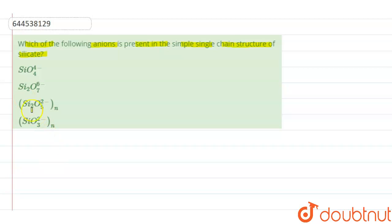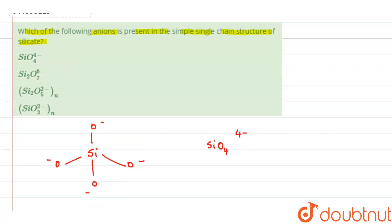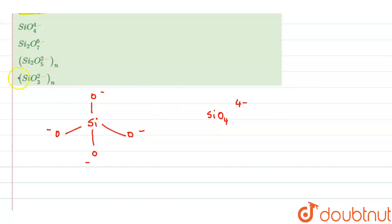We'll see the first option SiO4^4-. We have silicon connected to 4 oxygen - O, O, O, and the other one is over here. When oxygen is connected to a single bond, we know that it gets a negative charge. So it is SiO4 and then we have 4 minus. This is going to be a single unit, it cannot be a sheet or a chain. This is a single unit.